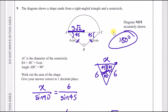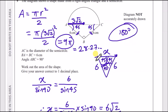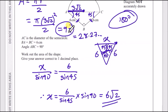Area of a full circle is πr². Since it's a semicircle, divide by two: π×(3√2)² ÷ 2. Now (3√2)² = 18, so the semicircle area is 18π/2 = 9π, which as a decimal is approximately 28.27. I prefer leaving the answer as 9π.